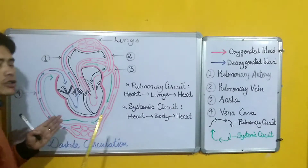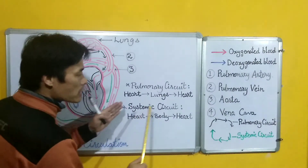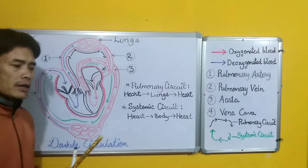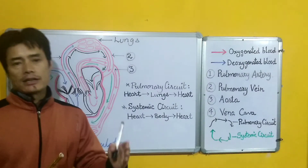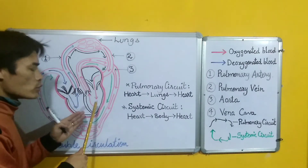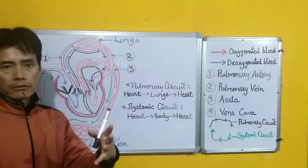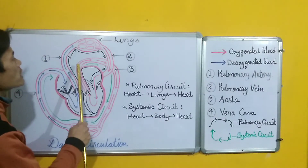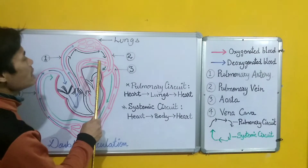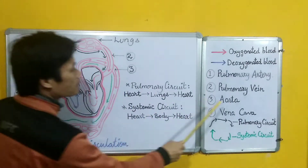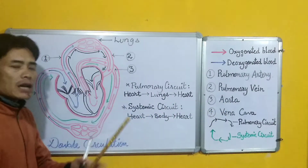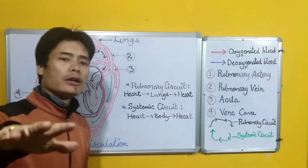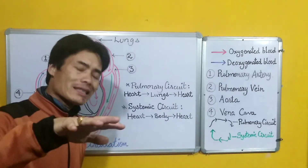In the systemic circulation, when oxygenated blood comes to the left side of the heart it enters the left ventricle, and the left ventricle pumps the blood into the major artery called the aorta. This aorta takes the oxygenated blood from the heart and distributes it to the different organs of the body.